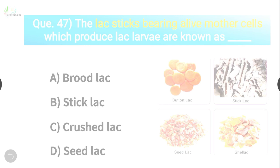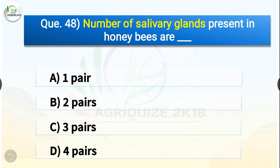Question number forty-eight: The number of salivary glands present in honeybees are dash. The options are 1 pair, 2 pairs, 3 pairs, or 4 pairs. The correct answer is option B — 2 pairs. Number of salivary glands present in honeybees are 2 pairs — one pair in the cephalic region and another pair in the thoracic region.